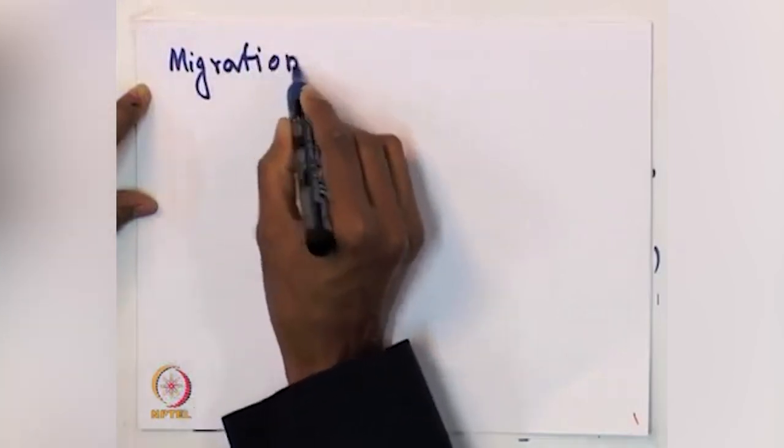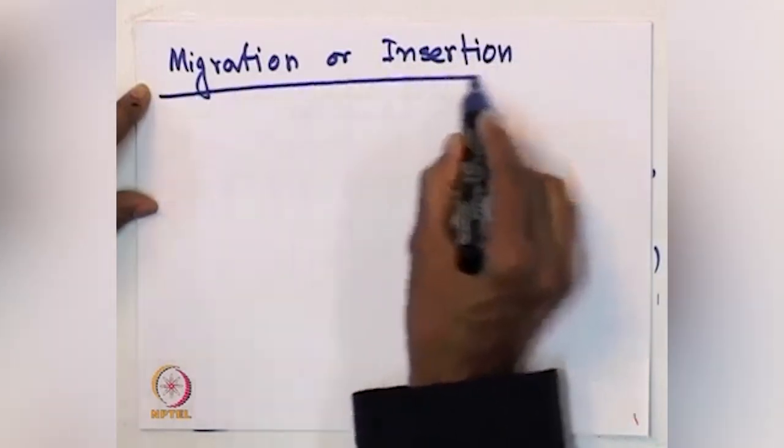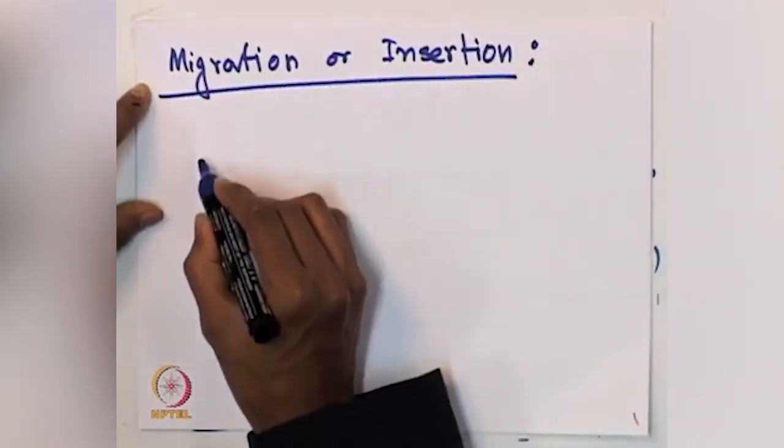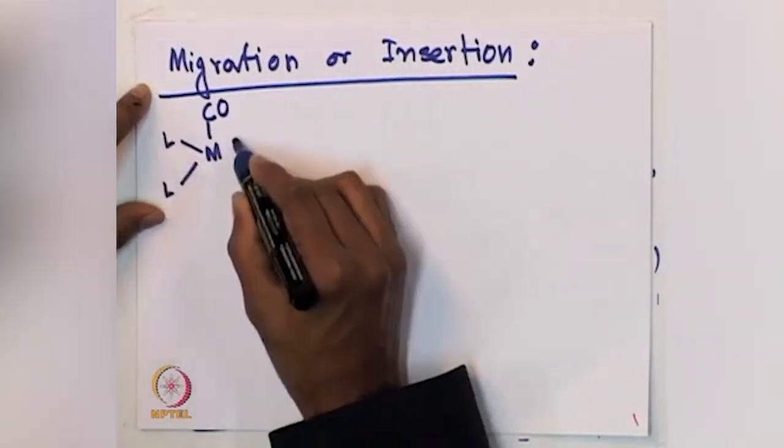One such example we will try to discuss right now. Subsequently we will discuss the stereochemistry-related issue — what happens when the insertion occurs and whether stereochemistry changes. Let us first take an example to understand whether an insertion or a migration is going on. The query is again: whether it is a migration or insertion.